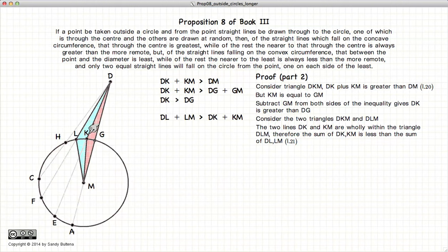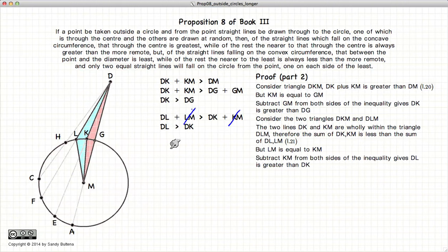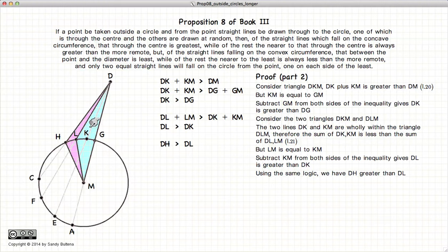Carrying on, if we look at these two triangles, the sort of pinkish one and the blue one, which is encased in this pink one, according to Proposition 21 of Book 1, if we have two triangles where one is completely inside the other, then the sum of DL, LM will be larger than DK plus KM. But again, LM and KM are equal in length, so we can remove them from this side of the equation. And we have DL is greater than DK. And we use the same logic for this light blue and purple triangle to show that DH is larger than DL. Putting this all together, we have DG is less than DK, which is less than DL, which is less than DH. So this is the second part of this proposition has just been proved.